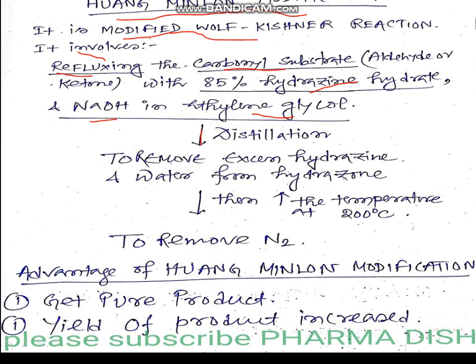This is followed by distillation — to remove excess hydrazine and water from the hydrazone. Then in the next step, we increase the temperature to 200 degrees centigrade to remove nitrogen gas.